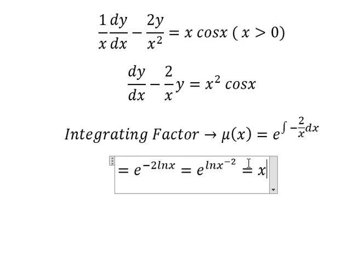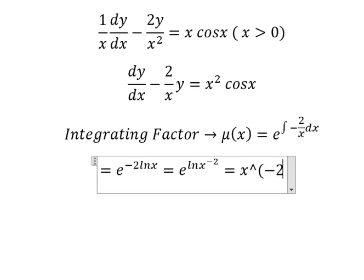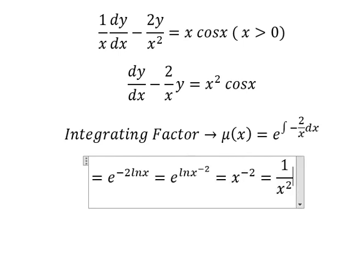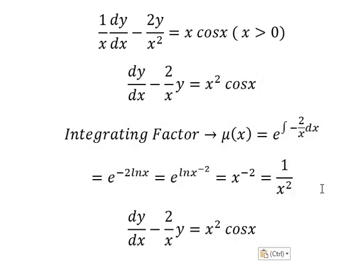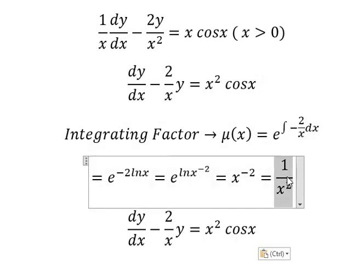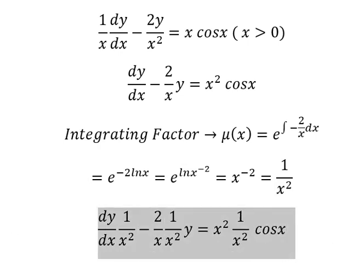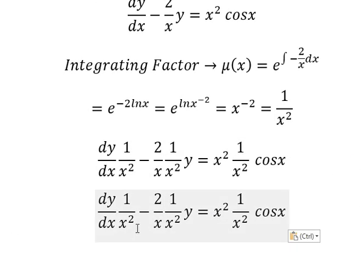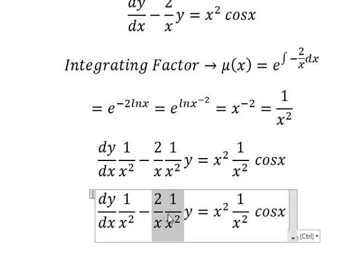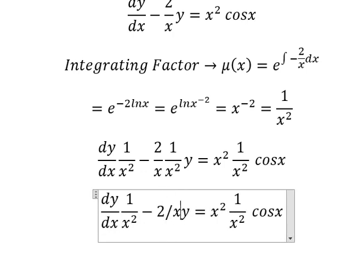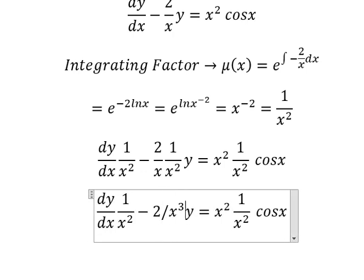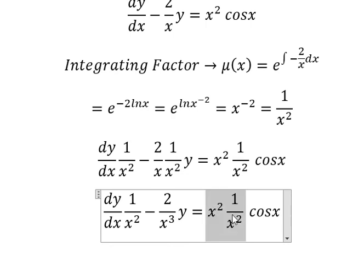And we have x to the power of negative 2, or we can put 1 over x squared. That means we multiply both sides by this one. This one we have 2 over x to the power of 3, this one we have 1.